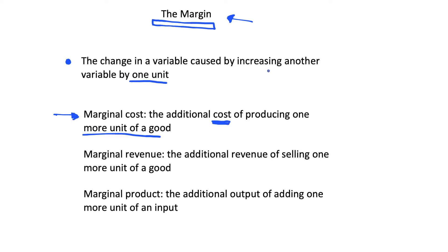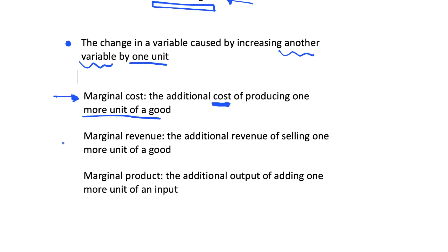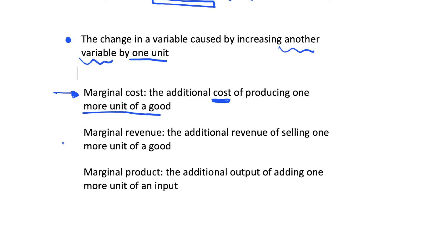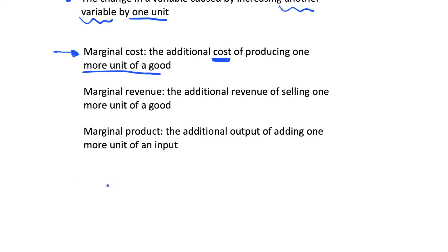Another variable in my definition: we're increasing our production of a good by one unit, and that's our 'other variable'. Our marginal cost is the change in our original variable — a change in the cost. Let's consider that we're currently producing 50 units — and just for simplicity, let's say we're producing pizza.